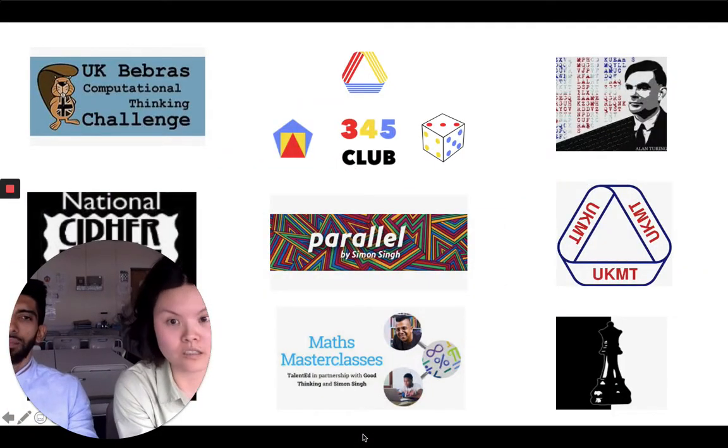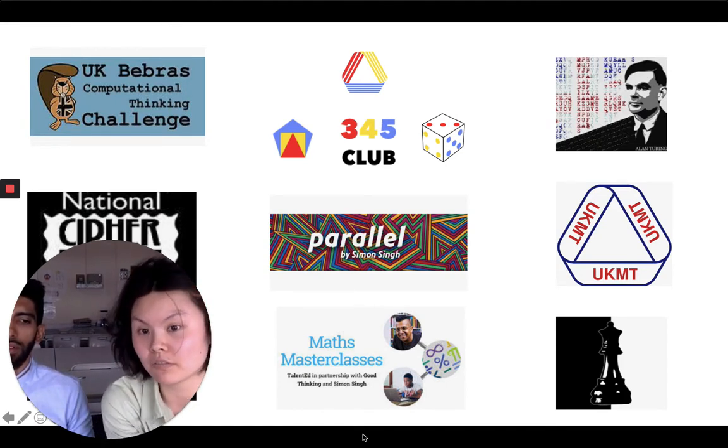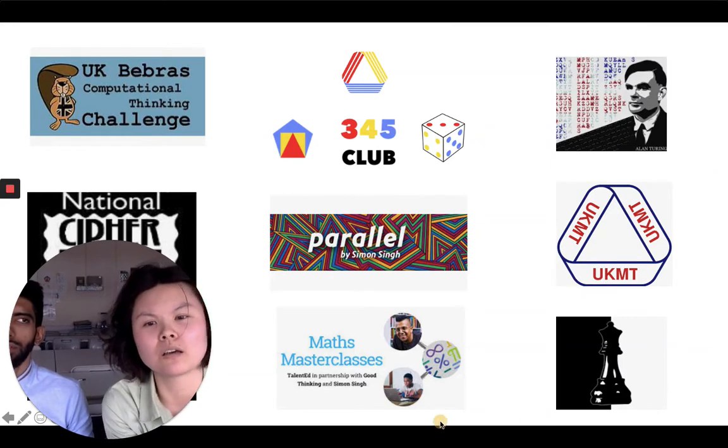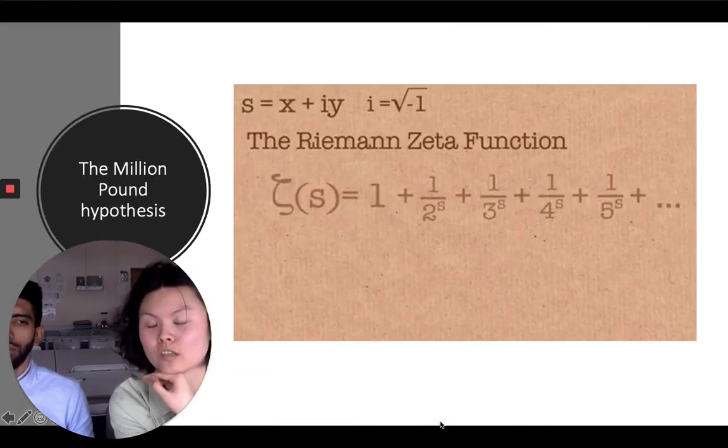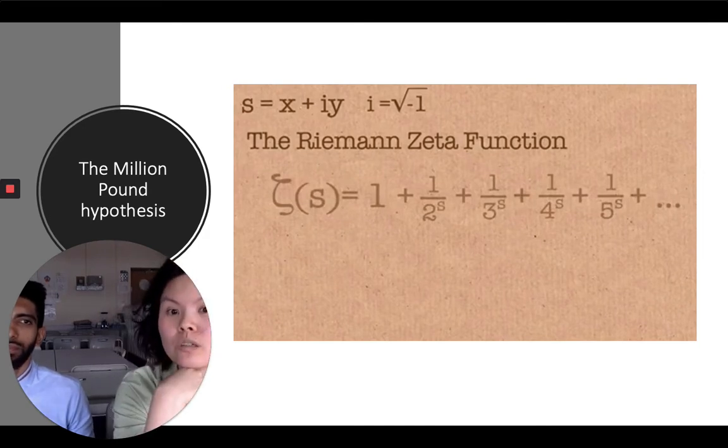You'll be competing against people in your class, in your year, in the school, in the Federation and even all across the UK. And if you're looking to compete to win a million pounds, well then I can suggest that you join the 345 Club, where we'll be looking at millennium problems, like for example, the Riemann hypothesis.